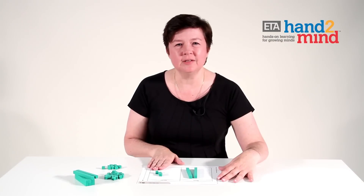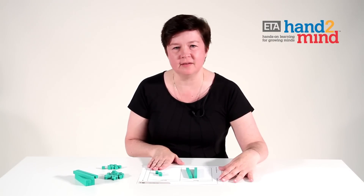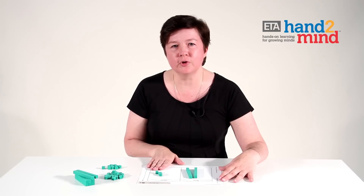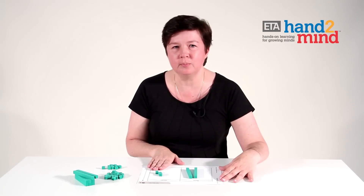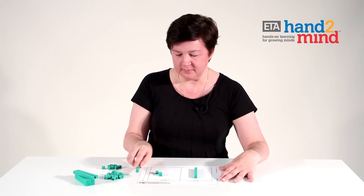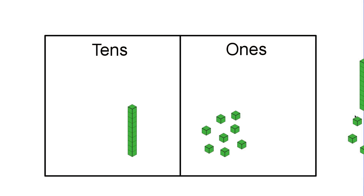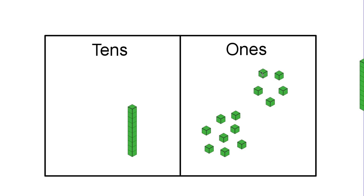There are a number of things we need to talk to students about when they solve a problem like this, and I'm going to move to a virtual base ten block representation, like you might use on an interactive whiteboard, in order to talk about some of those ideas. I'll start the problem the same way, where I have 18 represented as her score in the first half, and 5 represented as her score in the second half.